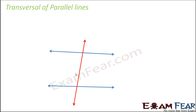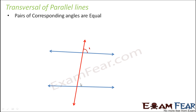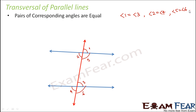In case of parallel lines, the following relations are observed. First, pairs of corresponding angles are equal. If this is angle 1 and this is angle 3, these are corresponding angles, so angle 1 equals angle 3. Similarly, angle 2 and angle 4 are corresponding angles, so angle 2 equals angle 4. Angle 5 and angle 6 are also corresponding angles, so angle 5 equals angle 6. A pair of corresponding angles are always equal.